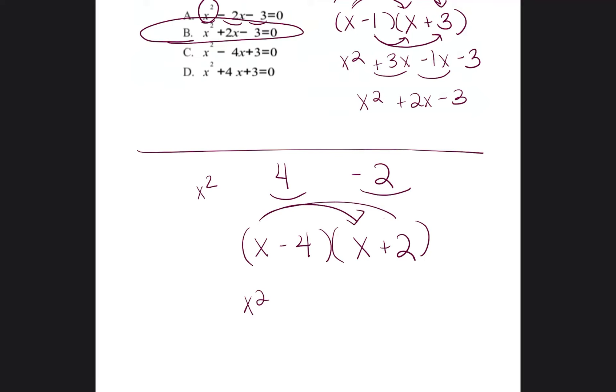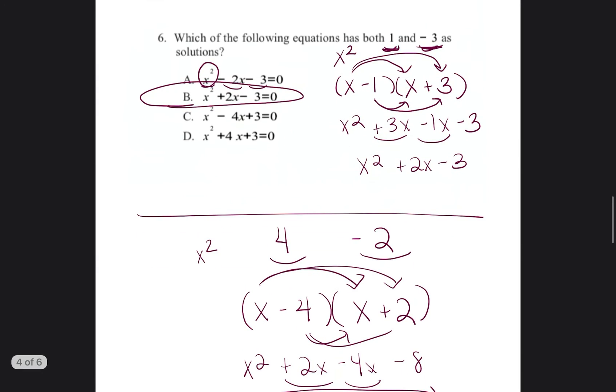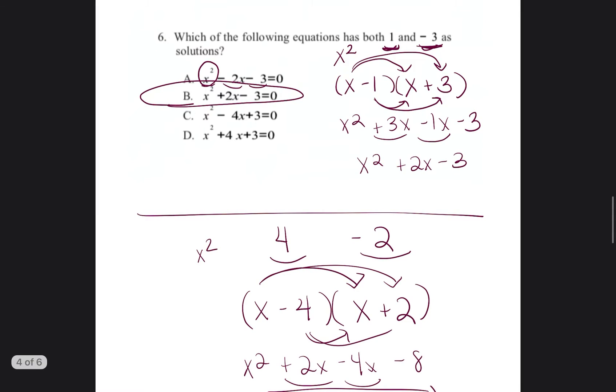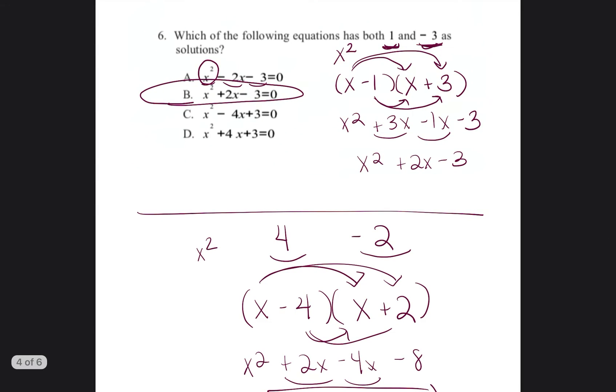So x squared plus 2x minus 4x minus 8. We're going to combine like terms, which is x squared minus 2x minus 8. And that would be the original equation. Just always write whatever is the opposite into the parentheses and then multiply it out.